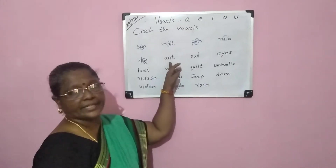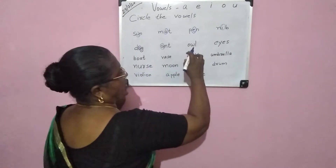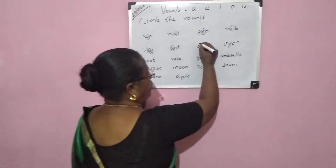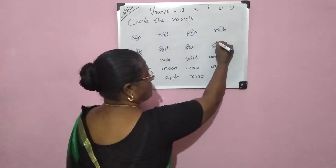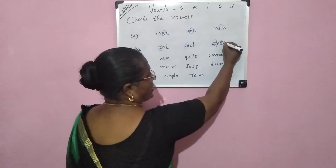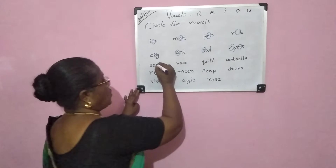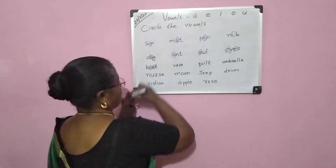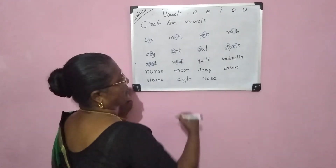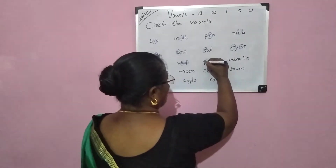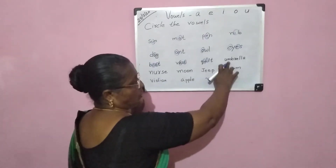And — middle vowel A. Owl — O. Ice — vowel I. Bot — O. Base — vowel A. E vowel. Kulj — U vowel. I vowel.